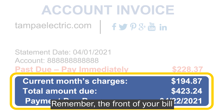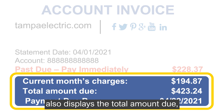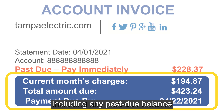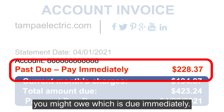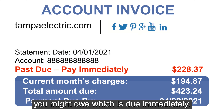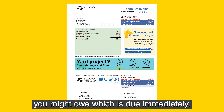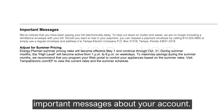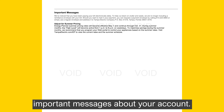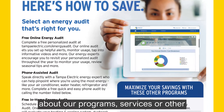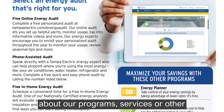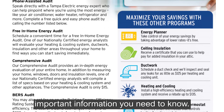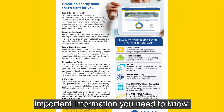Remember, the front of your bill also displays the total amount due, including any past due balance you might owe, which is due immediately. Following your billing details are any important messages about your account. The last part of your bill features messages about our programs, services, or other important information you need to know.